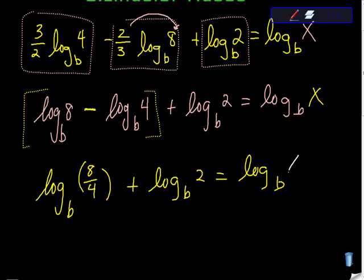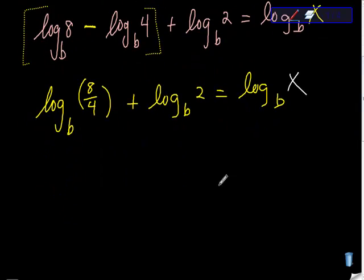Plus log base b of 2 equals log base b of, and again, reminding us that we are trying to get to this x value right here. So I'm just going to keep moving, simplify this bit right here. 8 over 4 is 2, and I don't need to show any extra work to do it. I just want to show you where I got it.